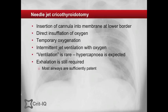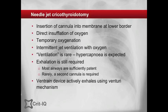In most patients, the upper airway remains sufficiently patent to allow passive exhalation. In rare circumstances where the upper airway is completely obstructed, a second cannula can be inserted into the cricothyroid membrane. A prolonged inspiratory-expiratory ratio such as 1 to 8 and lower inspiratory oxygen flow rates may be required. The Ventrain device reportedly actively facilitates exhalation using a Venturi-type action.